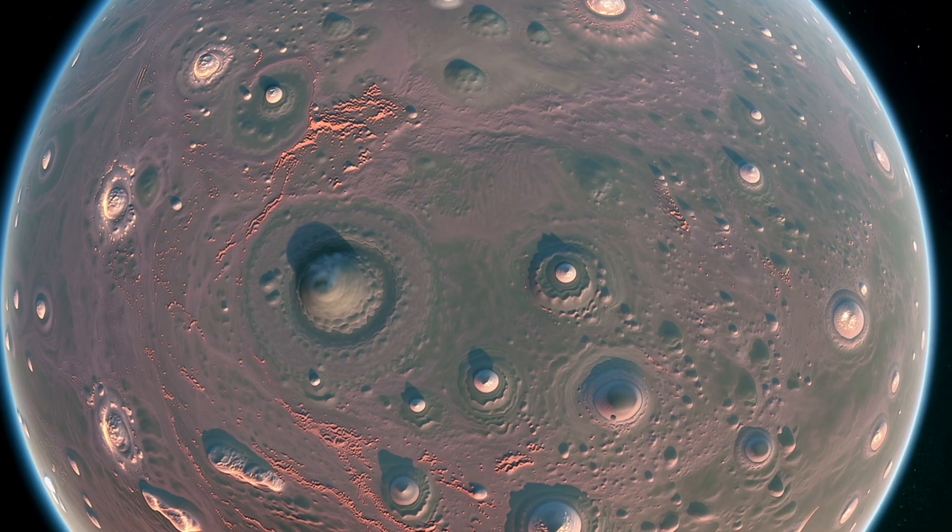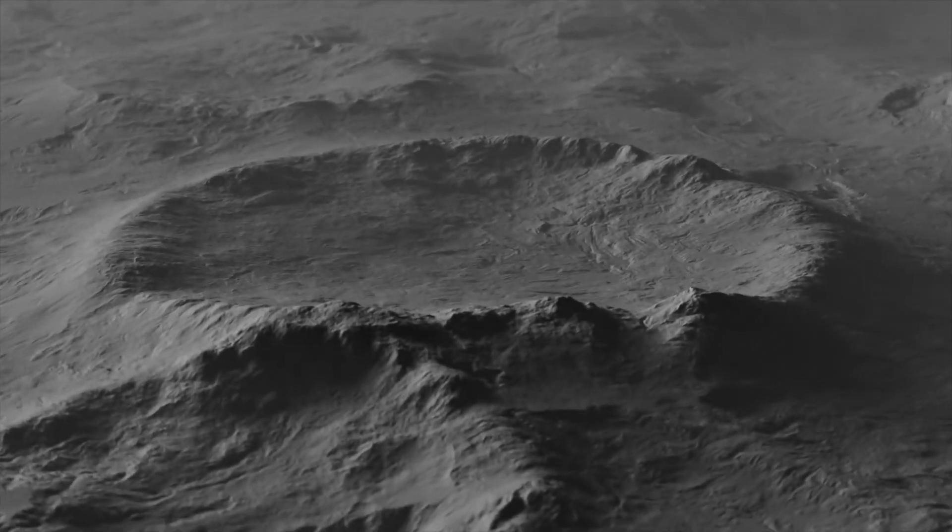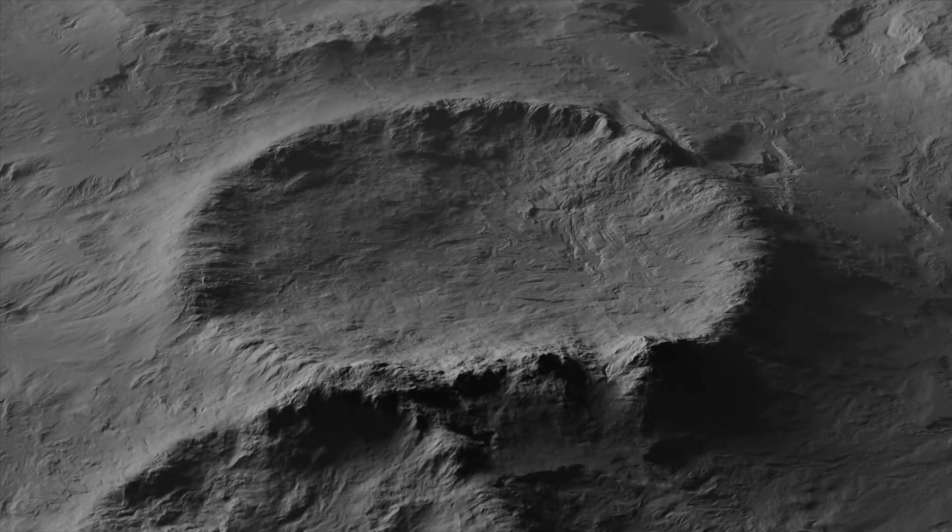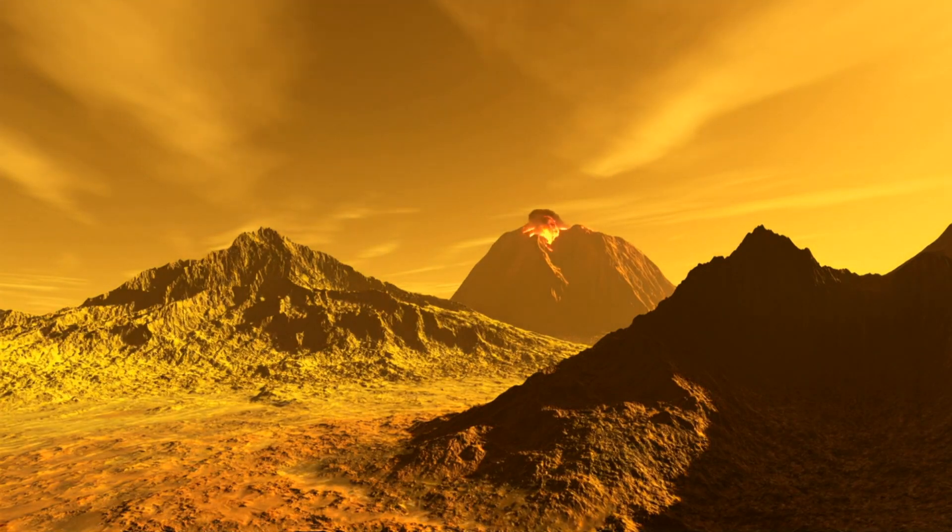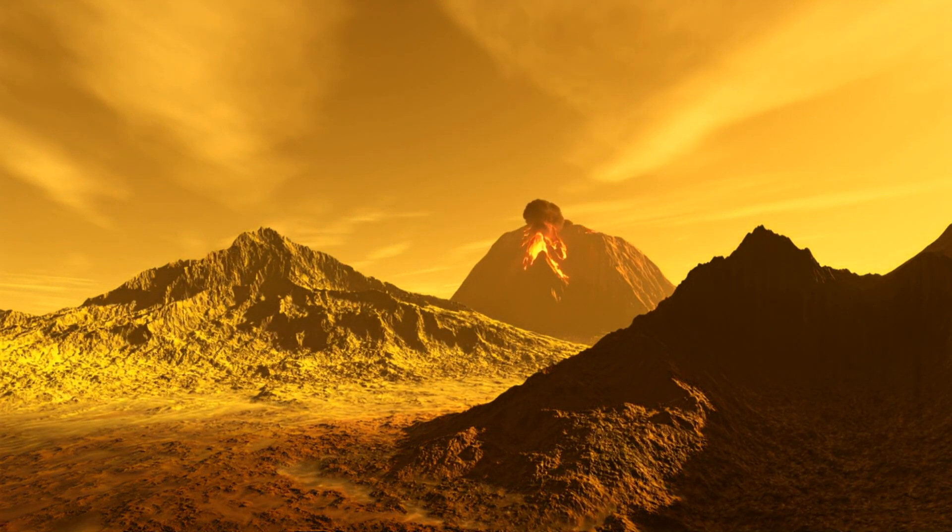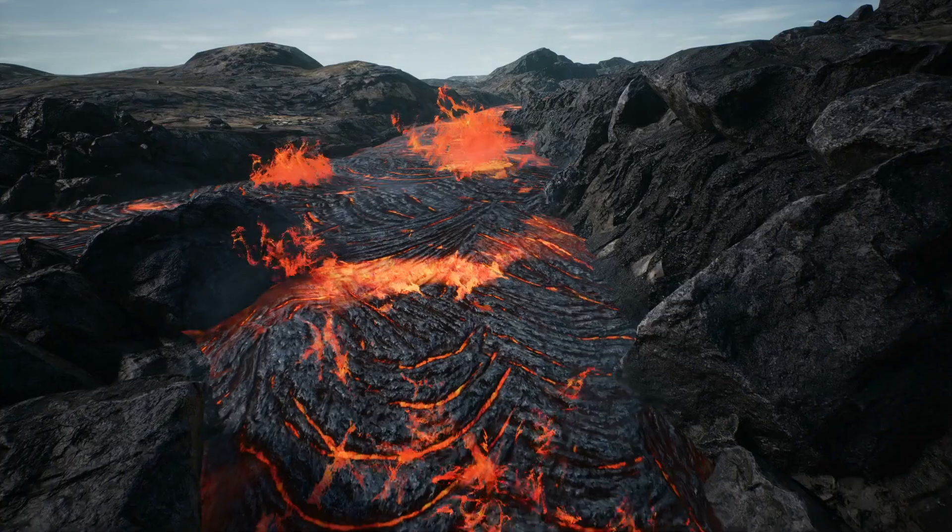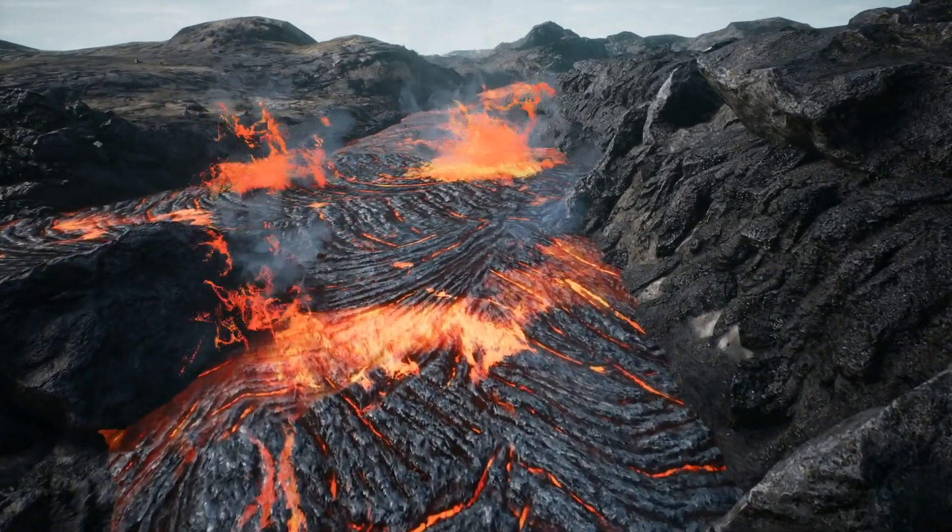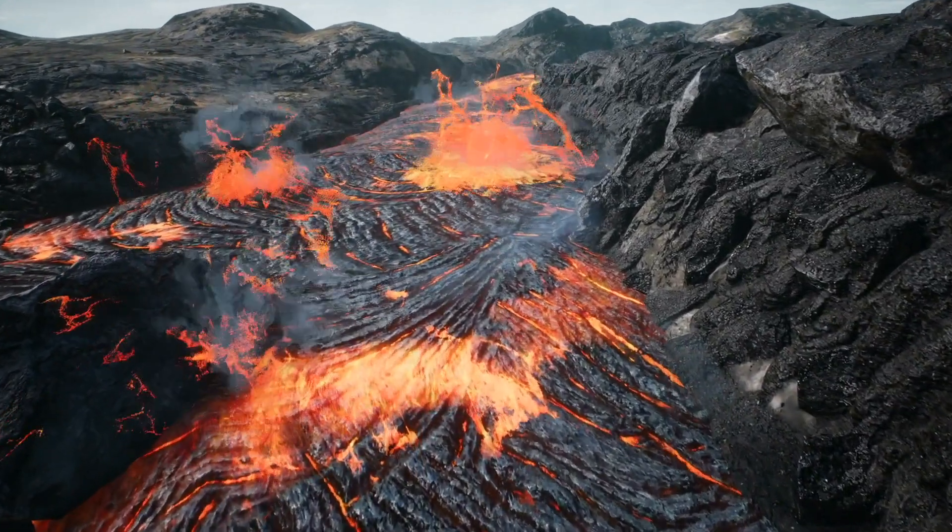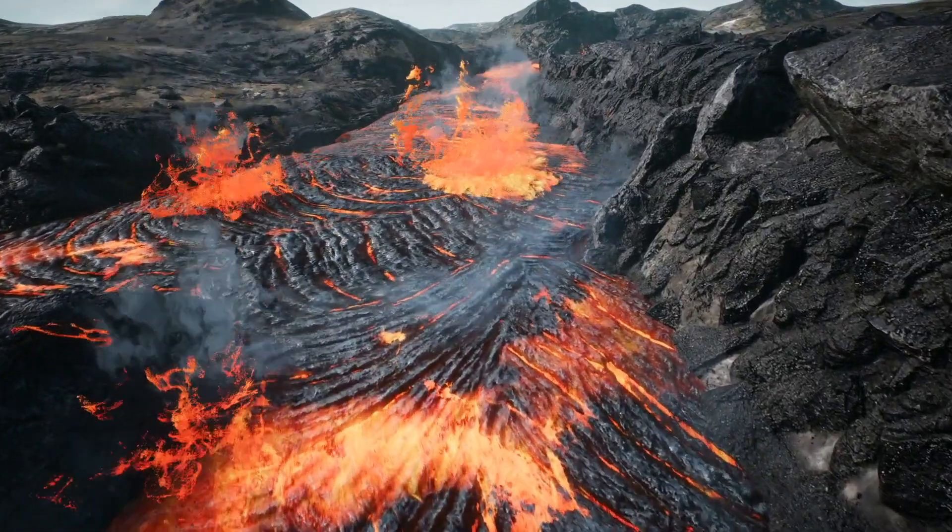For starters, the surface of Venus is dominated by huge impact craters and highly active volcanoes. It has more volcanoes than any other planet in our solar system. About 65% of the planet consists of volcanic lava plains, indicating that volcanoes played a major role in shaping its surface.